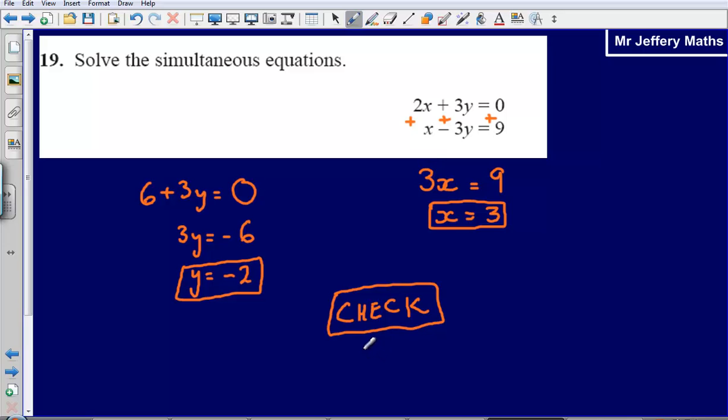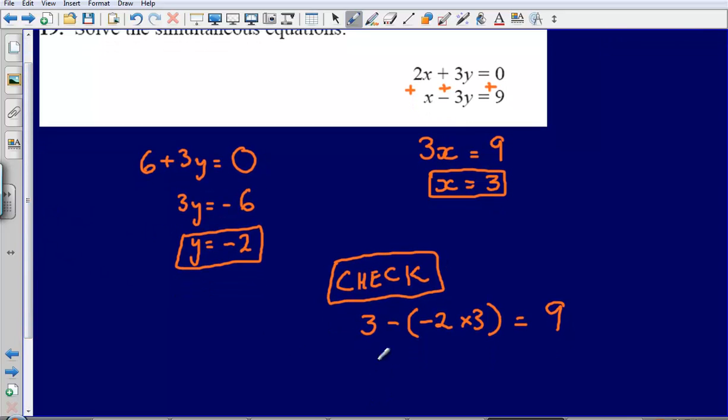So let's test this, well x is 3, so we've got 3 minus, and then we've got minus 2 multiplied by 3. And that should equal 9. So let's check if that does actually equal 9. 3 minus, well minus 2 times by 3 is minus 6, does that equal 9? In this case yes it does, 3 minus minus 6, that gives us 9.